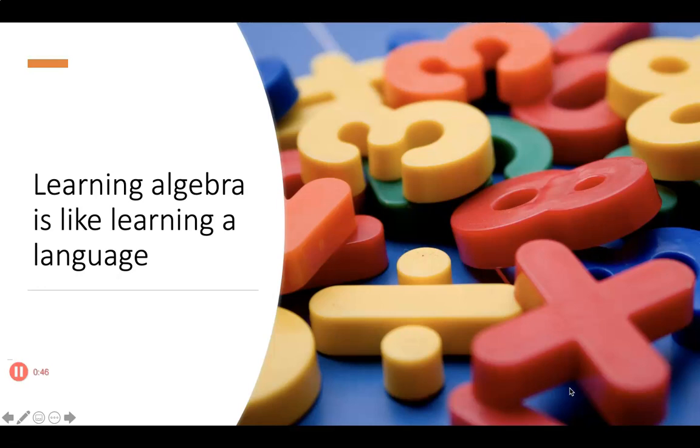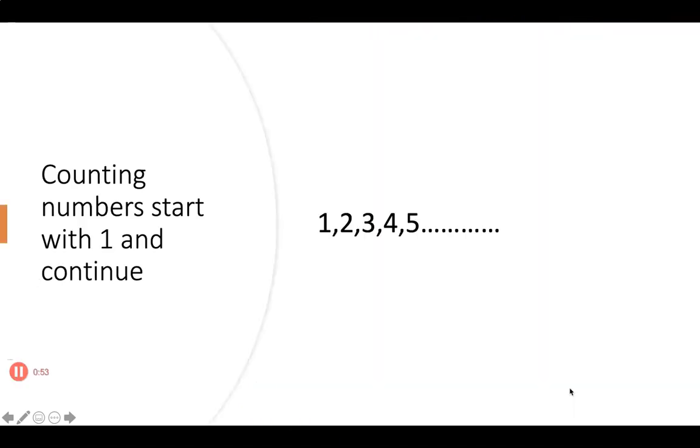This is a very fundamental fact about algebra. Now let's look at the numbers. The most basic numbers that are used in algebra are those that we use to count objects. They start from one, two, three, four, five, and so on.